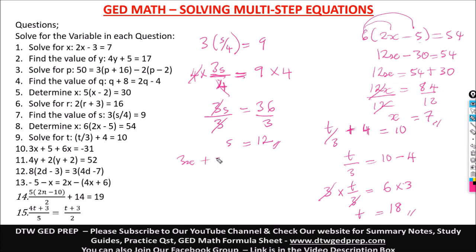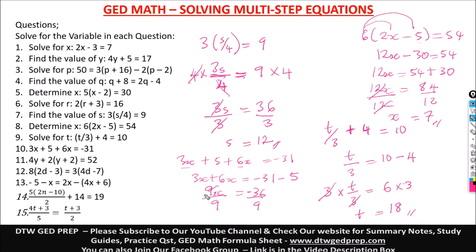Number 10: 3x plus 5 plus 6x equals negative 31. Combine the like terms 3x and 6x. Take positive 5 to the other side — it becomes negative 5. So 9x equals negative 31 minus 5. Two negative numbers: we add, giving 36, and the sign is negative. So 9x equals negative 36. Divide both sides by 9, and since we're dividing a negative by a positive, x equals negative 4.